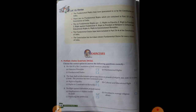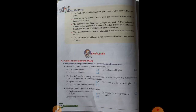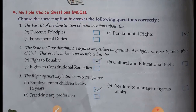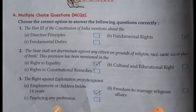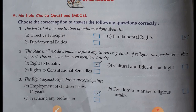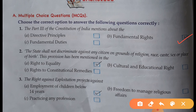Here is your lesson number 7 on page number 58. You can see your question is multiple choice question. First: the part 3rd of the constitution of India mentions about the fundamental right — here you have to take option B. Then second question: the state shall not discriminate against any citizen on ground of religion, race, caste, sex or place of birth. This provision has been mentioned in the right to equality.